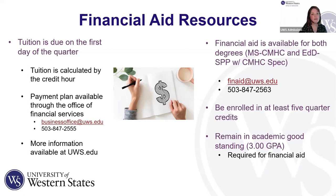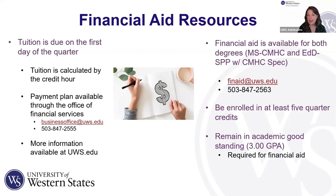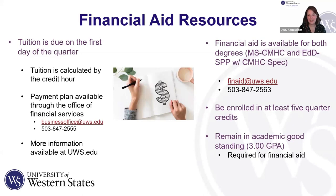To qualify for federal financial aid on the quarter system, you must be enrolled in at least five quarter credits — most likely two classes. Students must also maintain good academic standing, which means a 3.0 GPA, and this is required for financial aid eligibility.